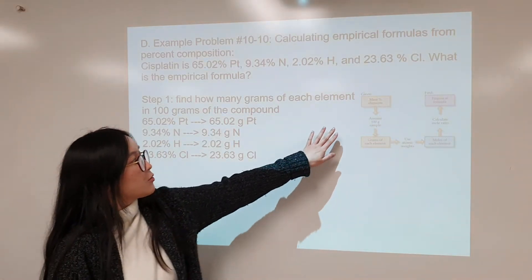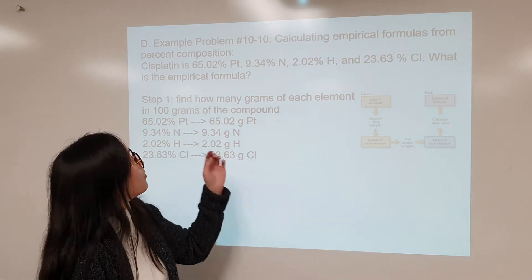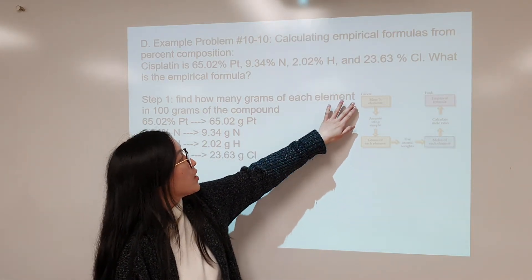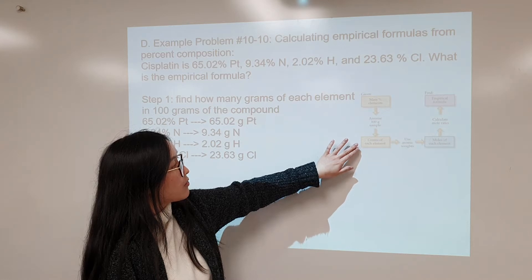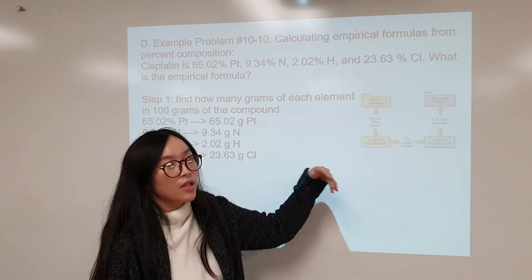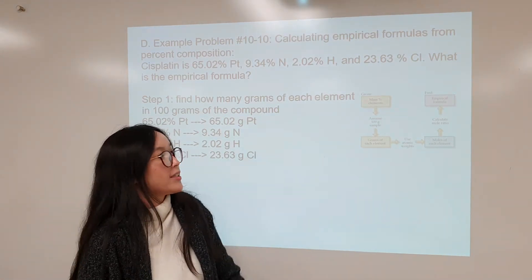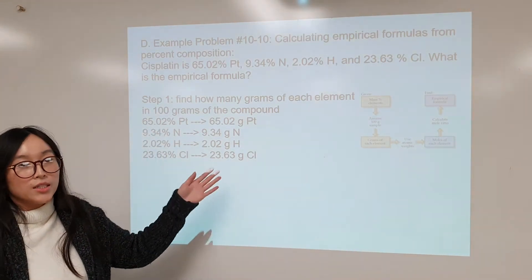And of course we have this image right here that will help you easily go through the process of calculating empirical formulas. So first you want to look at the percents given of each element. You want to convert it to the grams of each element, and then convert it to moles of each element, and finally get your ratio and get your empirical formula at the end. That's the process of doing that.